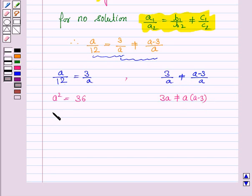Now A squared equals 36 and then we have 3A not equal to A squared minus 3A. So this implies A squared minus 3A is not equal to 0.